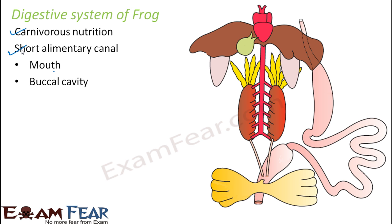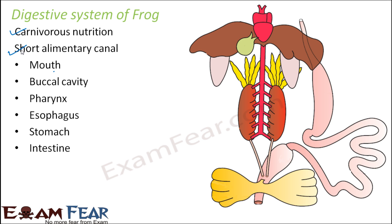The parts of the frog's digestive system are: mouth, buccal cavity (oral cavity), pharynx, esophagus, stomach, intestine, rectum, and finally cloaca. Most of these names — mouth, buccal cavity, pharynx, esophagus, stomach, intestine, rectum — have been discussed in cockroach or earthworm. Cloaca is a new term here.